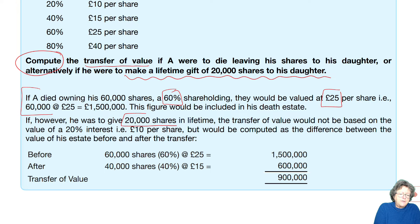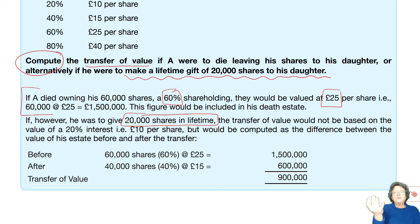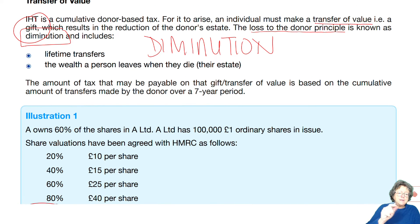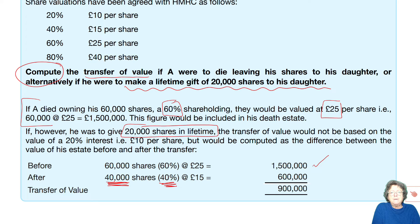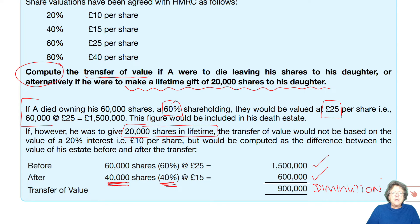£20,000 shares, lifetime transfer. The transfer value is not based on the fact that it's a 20% holding — i.e. £10 a share. It's computed on the difference between what the value of the estate was before, less the value of the estate afterwards. Which is, again, the diminution — the loss to the donor. What was the estate worth before? £1.5 million. If we've given away that 20% holding, this individual only has a 40% holding afterwards, and only owns 40,000 shares because they've given away 20,000 shares. So, 40,000 shares at 40% of the holding at £15 is £600,000. The transfer of value — or the diminution — the estate has gone down by £900,000.